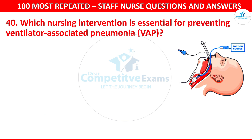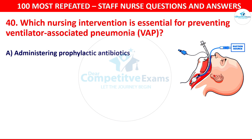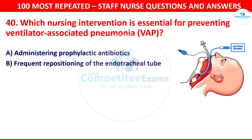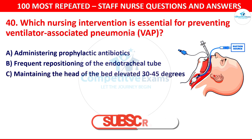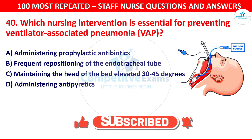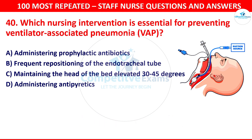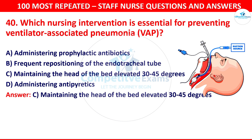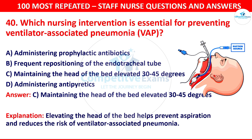Question number 40: Which nursing intervention is essential for preventing ventilator-associated pneumonia? Options are administering prophylactic antibiotics, frequent repositioning of the endotracheal tube, maintaining the head of the bed elevated 30 to 45 degrees, or administering antipyretics. The correct answer is maintaining the head of the bed elevated 30 to 45 degrees. Elevating the head of the bed helps to prevent aspiration and reduces the risk of ventilator-associated pneumonia.